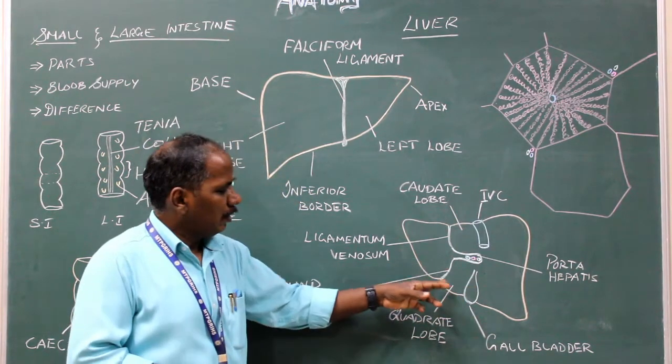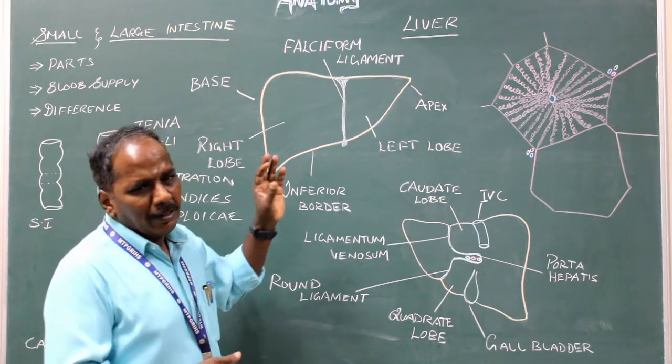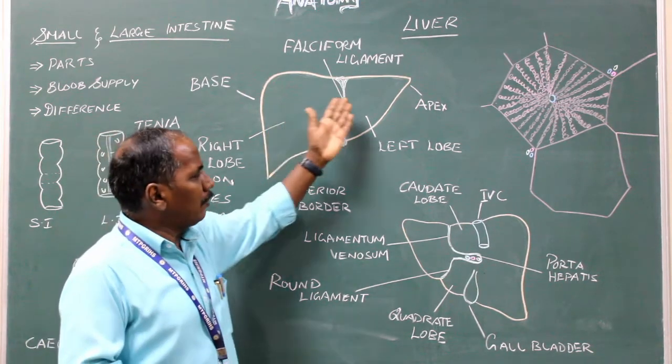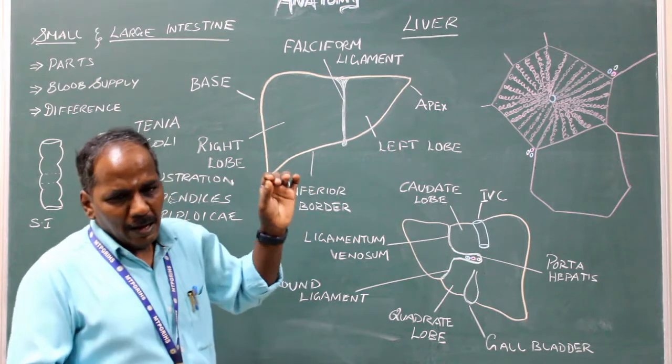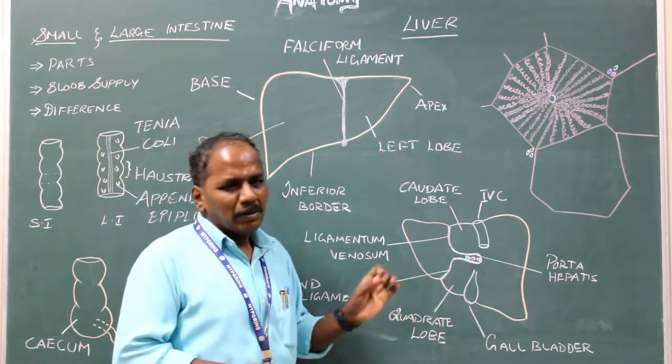So it consists of two lobes, right and left lobe. In addition, it has two lobes: caudate lobe and quadrate lobe.